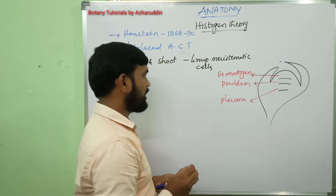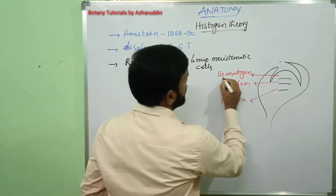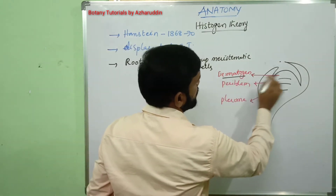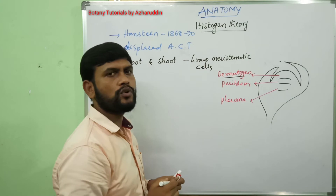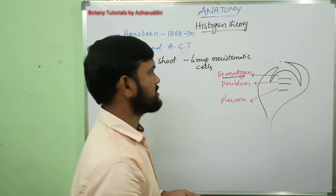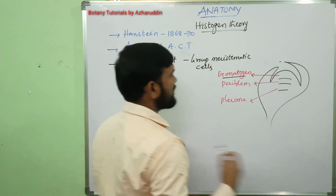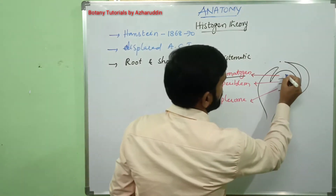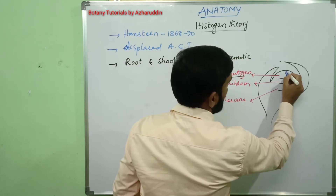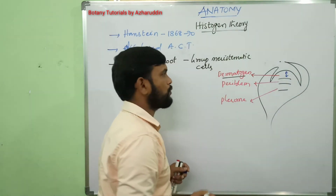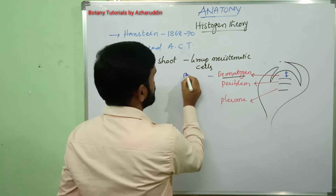Coming to dermatogen: dermatogen is the outermost layer in which the cells divide anticlinally and produce epidermis.